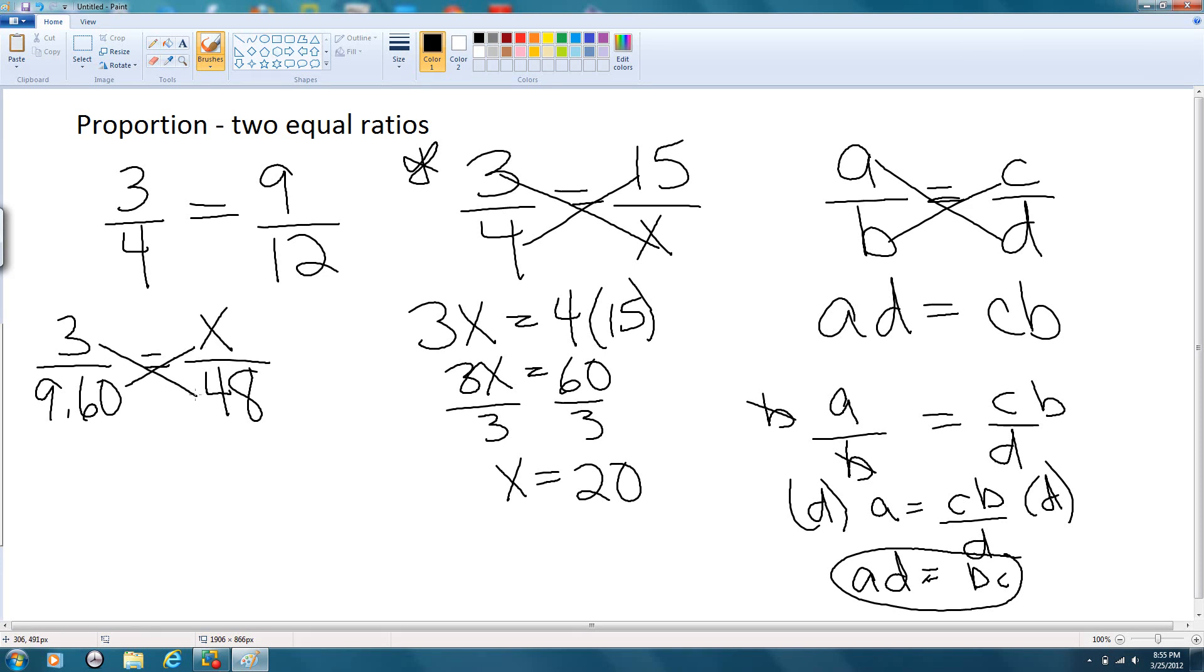We do cross products and we get 3 times 48 is equal to 9.6X. We divide both sides by 9.6, and if you do that or you get out your calculator and do that, you end up apparently with X is equal to 15. So with that amount of money we can buy 15 posters.